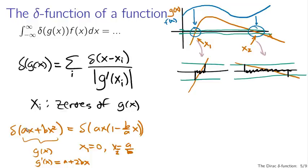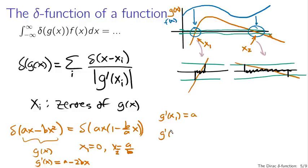If this inner quantity is g of x, then g prime of x equals a minus 2bx. I evaluate g prime at x1 equals 0: the second term drops out and I get a. I evaluate g prime at x2 equals a over b: substituting in gives a minus 2a, so I get minus a. The magnitudes of the derivatives are both equal to the absolute value of a, which makes sense since g of x is a parabola between 0 and a over b.